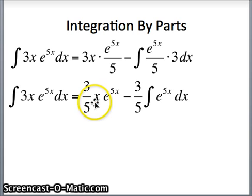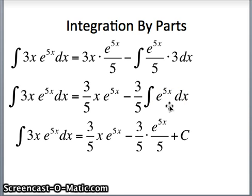And what's that going to give us? 3 fifths x e to the 5x minus 3 fifths the integral of e to the 5x. One more time, we have what I gave you earlier. Integral of e to the kx is e to the kx over k. Integral of e to the 5x is e to the 5x over 5.